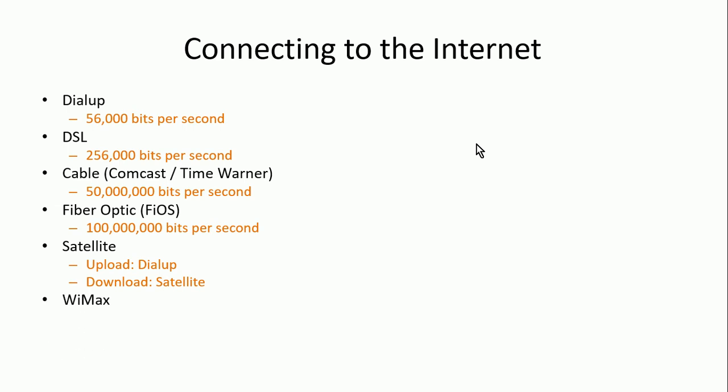Another way to connect to the internet, becoming much more popular today, is WiMAX — also known as LTE or 4G — which uses your cell phone. The same service you use for your cell phone to access the internet can be used for other devices as well. You can tether other devices through your phone or make your phone a hotspot. Many of you have probably done that before.